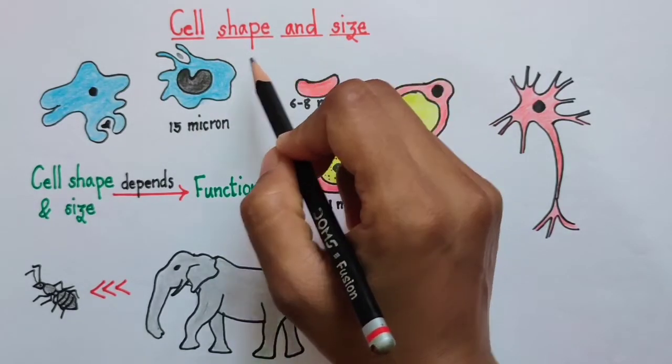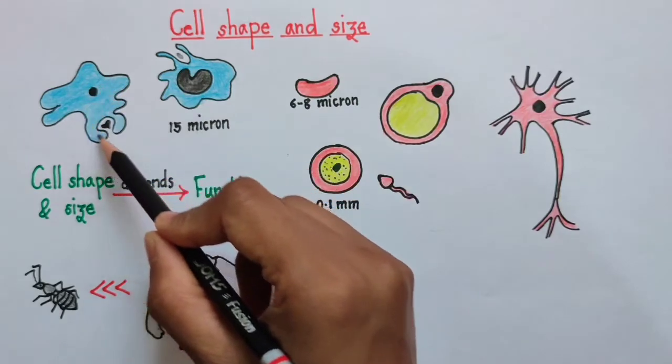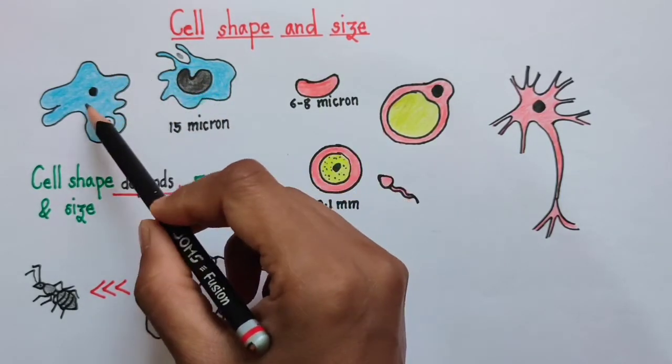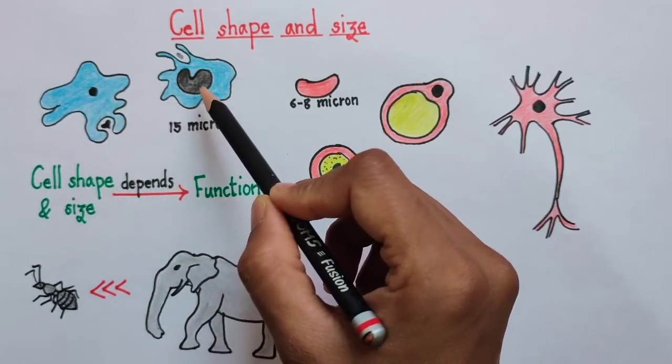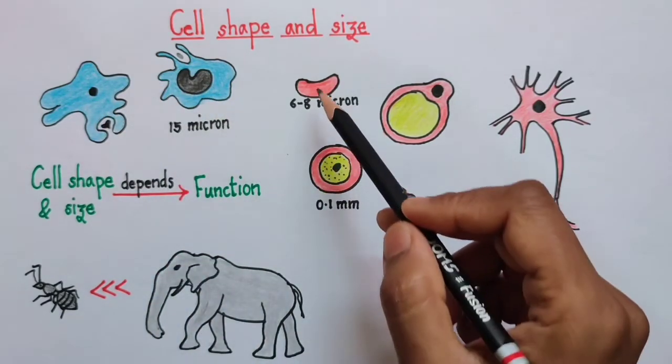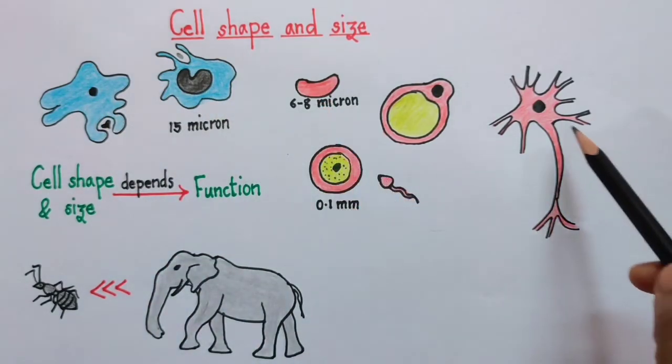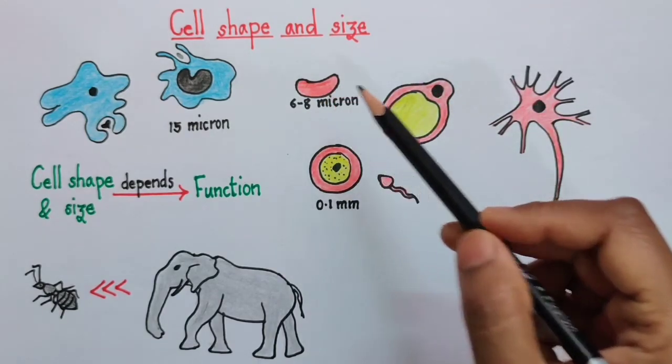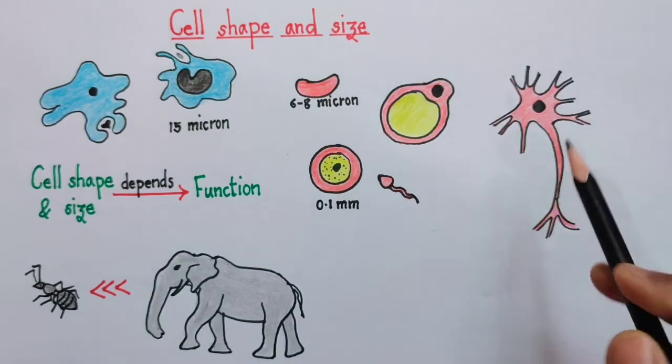As we already know, there are certain cells which do not have any particular shape like amoeba, like our WBCs. On the other hand, there are certain cells which are characterized by a definite shape like the RBCs, like the nerve cell.